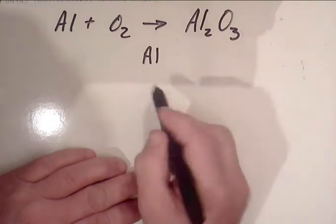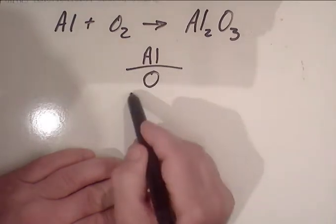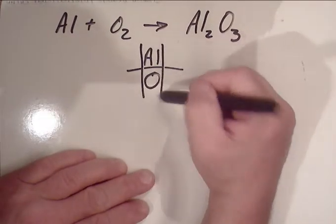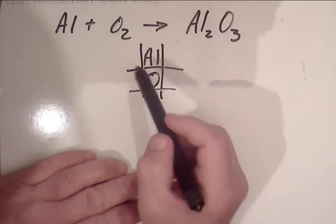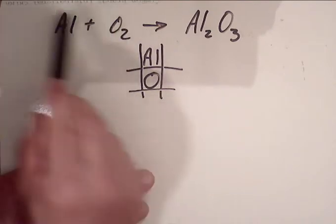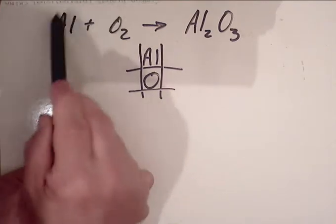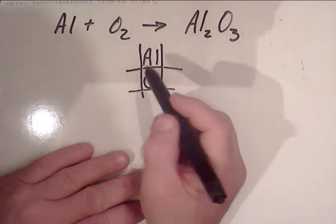We're going to take Al and oxygen. Al stands for aluminum. You want to list how many are on the reactant side, that's the left side, and how many are on the product side, that's the right side.